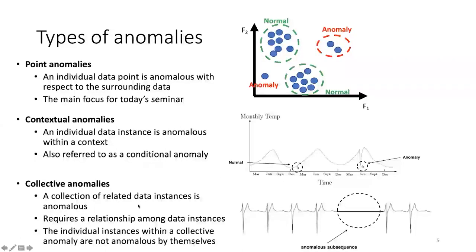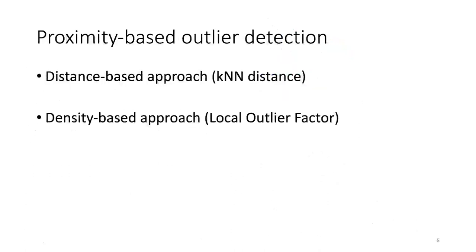Third, collective anomalies — when a whole pattern is missing or different from what one would expect. In this simple example of a heartbeat signal, if we have no signal in a certain portion, that indicates an anomaly.